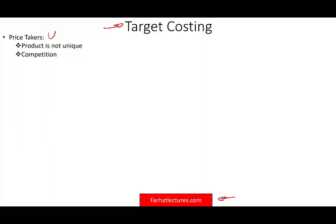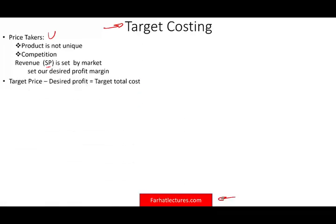Under those circumstances, we're going to look at the selling price — how much revenue we can generate — mainly driven by our selling price. Then we're going to set our desired profit margin: how much profit do we want to make? The formula is simple: take the target price, subtract your desired profit, and you get your target cost. For example, if you can sell something for $300 and you'd like to make $30 in profit, it should cost you $270 to make.